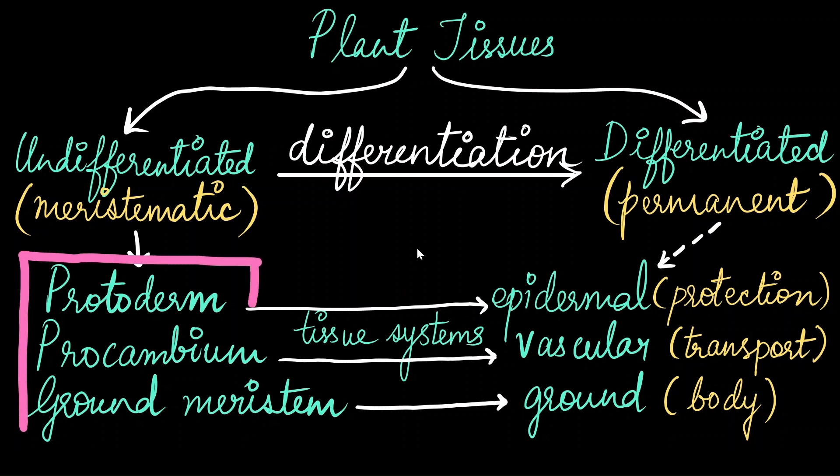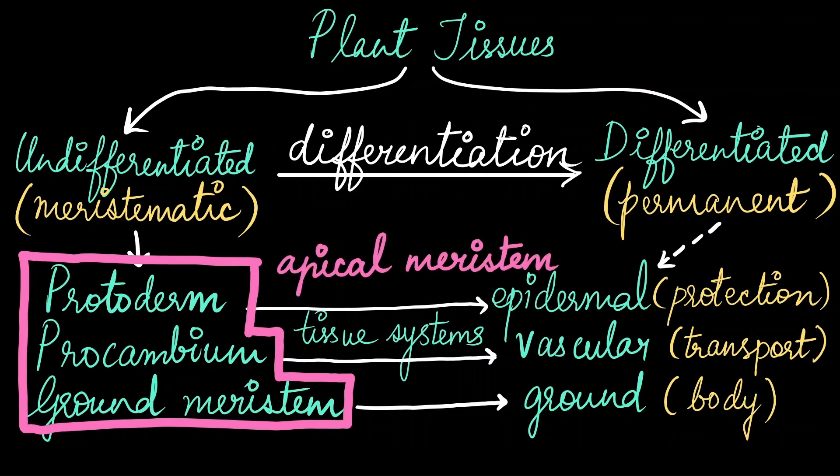So here, this protoderm, procambium, and ground meristems are all meristematic tissues, and these originate from the apical meristems, meaning the stem cells that are found either in the root tip or in the shoot tip. After differentiation, they form cells which are useful in protection, transport, and form the general body of the plant.